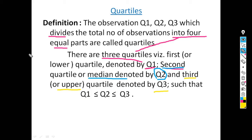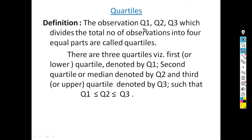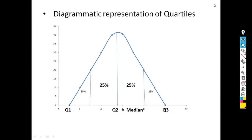The observations Q1, Q2, Q3 which divide the series into four equal parts are known as quartiles. There are three quartiles: Q1 (first quartile or lower quartile), Q2 (second quartile or median), and Q3 (upper quartile or third quartile). Diagrammatically, Q1, Q2, and Q3 divide the data into four equal parts.